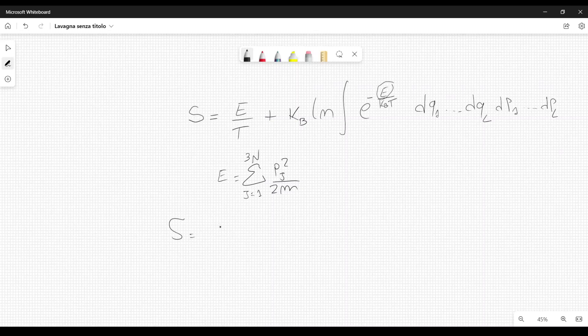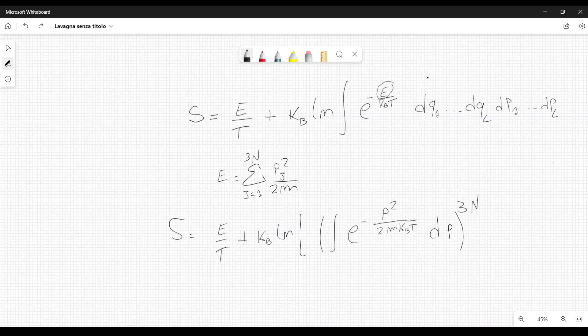If you use the formula for the energy in the entropy, we get S equal to energy over temperature. I'm interested in inserting this expression here plus k Boltzmann natural logarithm. Here we have integral of e to the minus p squared divided by 2m k Boltzmann temperature. We have to integrate over dp, and this is raised to the power of 3n because the integrals we have here, the multiple integrals, can be factored. They multiply each other because we have three times n independent integrals.